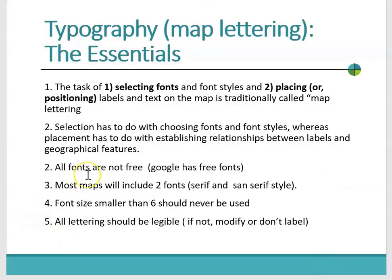So when we think about the essentials, the task of selecting fonts and font styles — placing or positioning labels in text on maps is traditionally called map lettering. Lettering selection has to do with choosing fonts and font styles, and you've got to actually think about what you choose. For the most part, you really don't want two different types of fonts. Keep in mind that waterways and lakes, and sometimes some maps, will have all natural features italicized. Remember, all fonts are not free. Most maps will include two fonts: a serif and a sans serif. Font size smaller than six should almost never be used. Bottom line is, don't use something if someone can't read it. All the lettering should be legible. If not, you need to modify your map in some way or remove the lettering. You don't put lettering on a map that someone won't be able to see or understand.